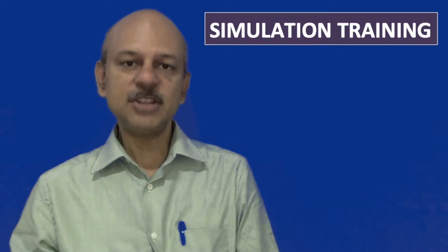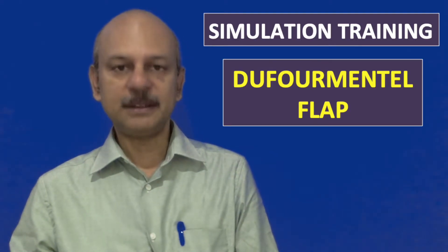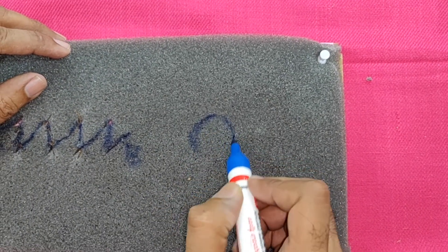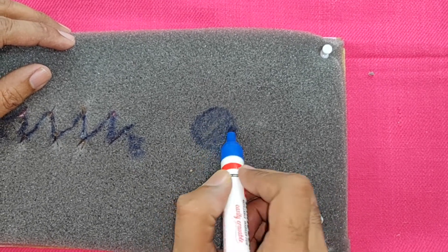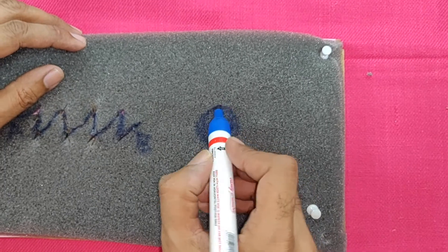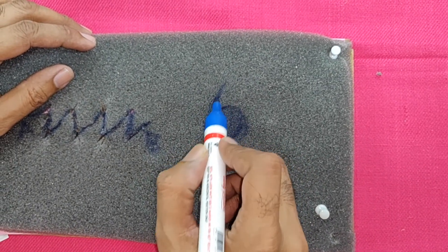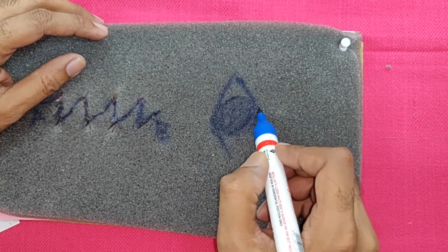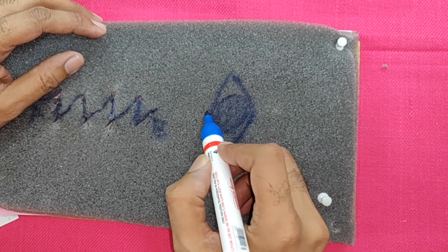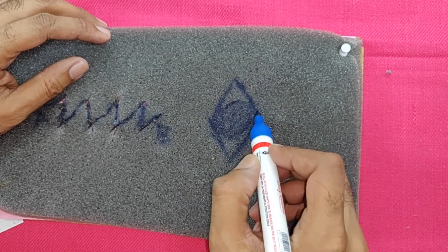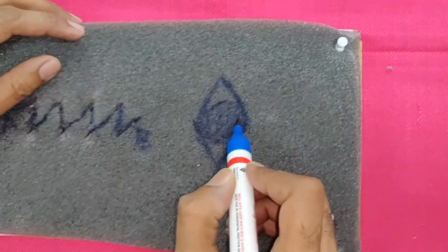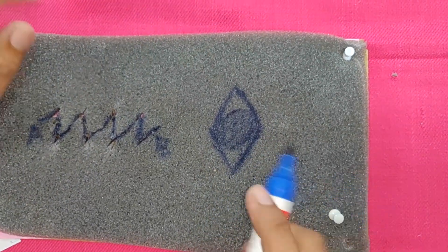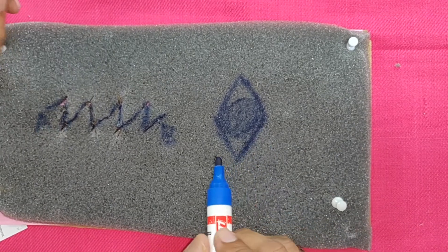This video deals with simulation training for the deformmental flap. Supposing you have a very wide defect like this, and you want to mark a rhomboid. However, you find that the rhomboid has got more than 120 degree angle. When you have a rhomboid with more than 120 degrees at one side, you cannot do a Limburg flap because the amount of movement of the flap will not be enough. So you need to do what is known as a deformmental flap.